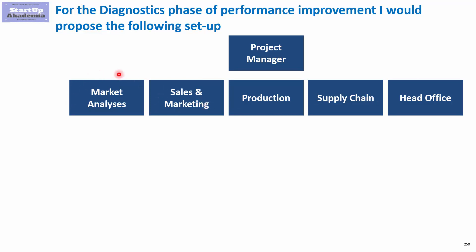One stream devoted to market analysis — so trends on the market, consumer trends, the winning business models, etc. Then one stream devoted to sales and marketing efficiency, another one devoted to production and supply chain, and finally one devoted to head office, where you go through the organizational chart and try to see how efficiently the organization is organized.